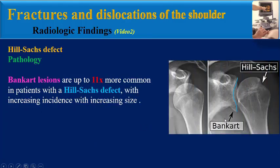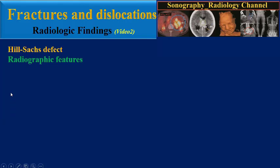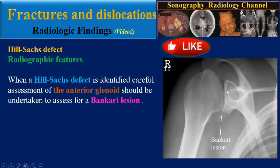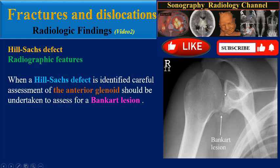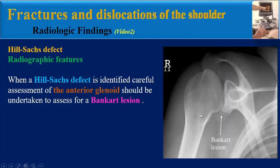Bancourt lesions are up to 11 times more common in patients with a Heel Socks defect, with increasing incidence when we have increasing size of defect. When a Heel Socks defect is identified, careful assessment of the anterior galanoid should be undertaken to assess for a Bancourt lesion.